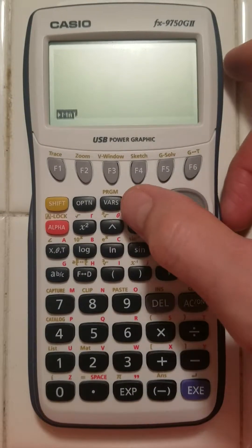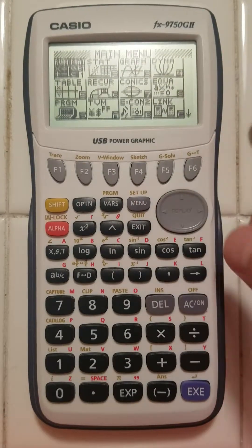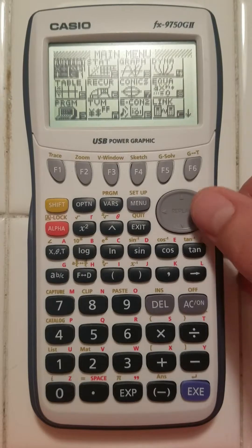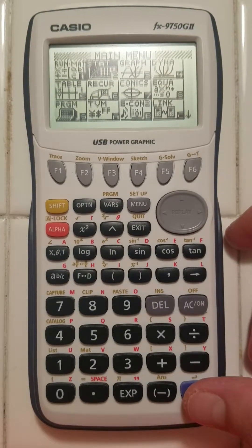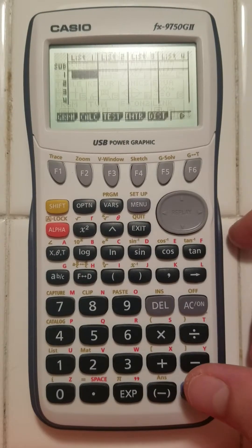In order to perform linear regression on a Casio, I need to turn my calculator on and press the menu button. Once in menu, I move to the right and press execute on the stat category for statistics.